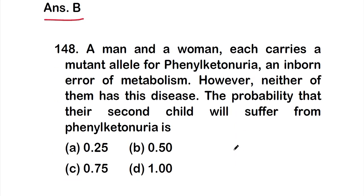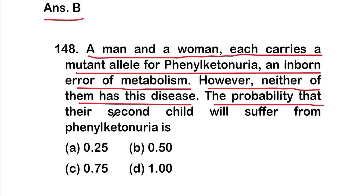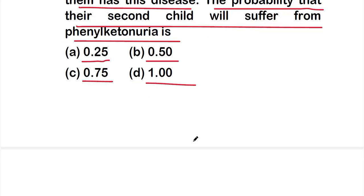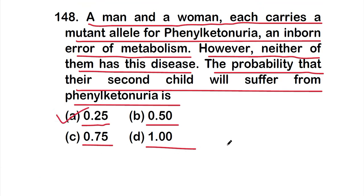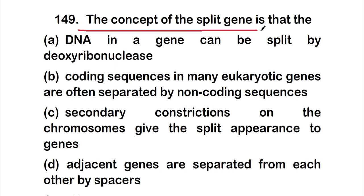Question 148: A man and a woman each carry a mutant allele for phenylketonuria, an inborn error of metabolism, but neither of them has the disease. The probability that their second child will suffer from phenylketonuria is: option A — 0.25; option B — 0.50; option C — 0.75; option D — 1. The correct answer is option A — the probability is 0.25.